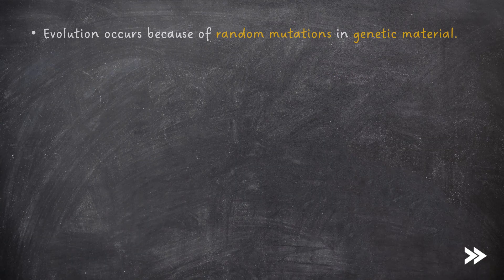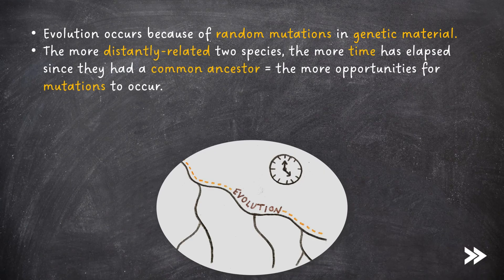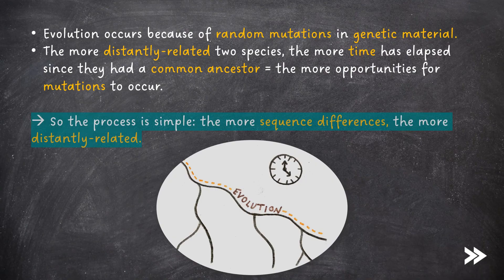Note that evolution occurs because of random mutations in genetic material. The more distantly related two species, the more time has elapsed since they had a common ancestor, meaning there have been more opportunities for mutations to occur. So the process is simple: the more sequence differences, the more distantly related.